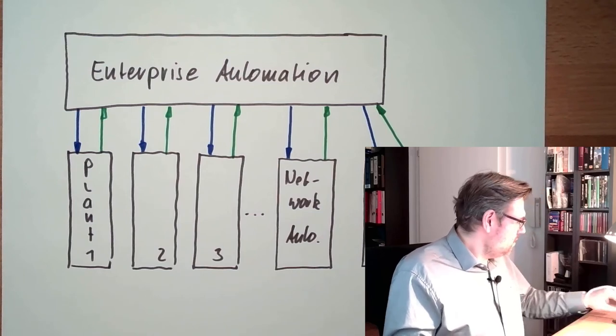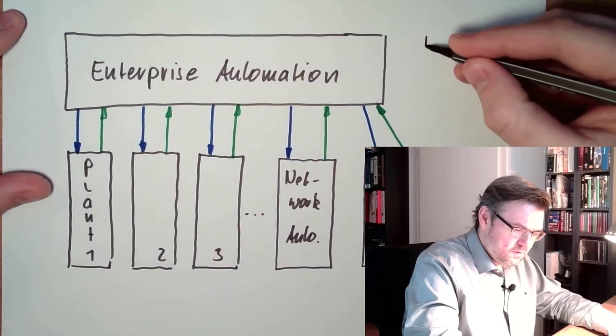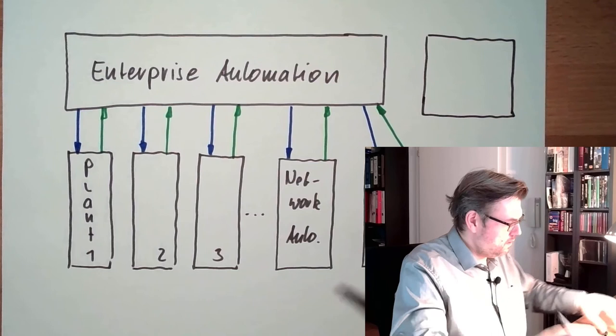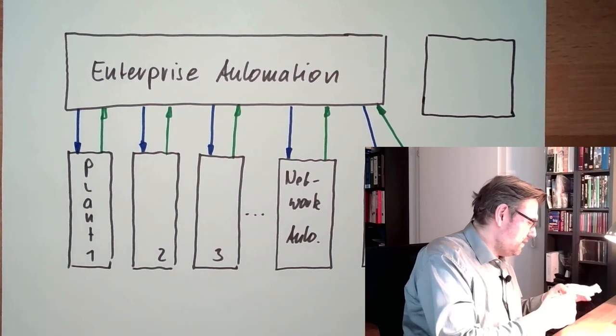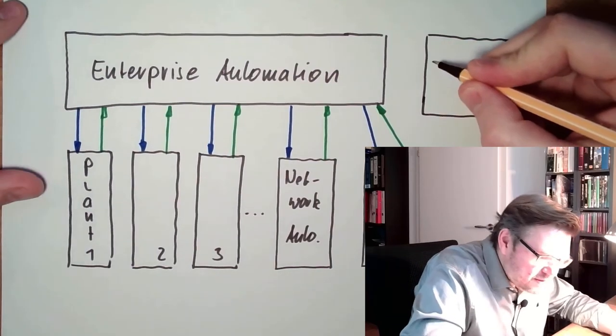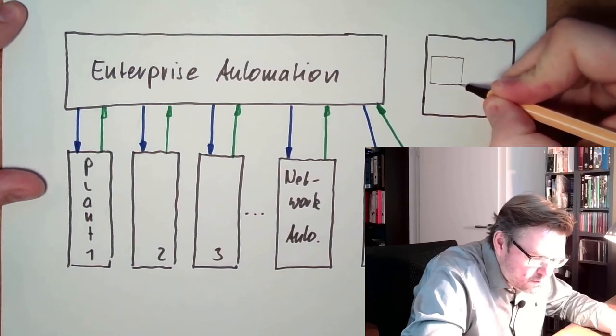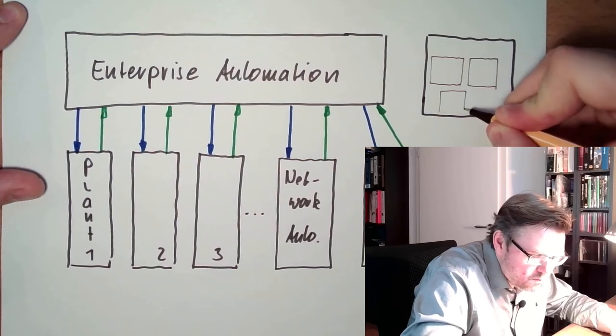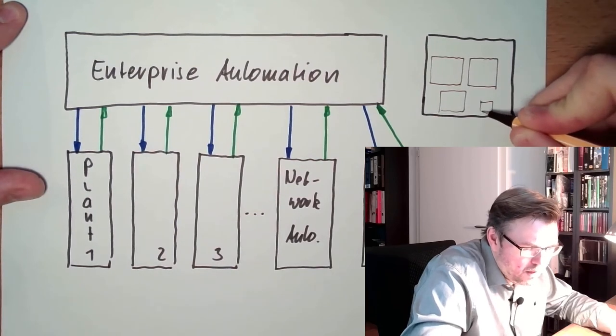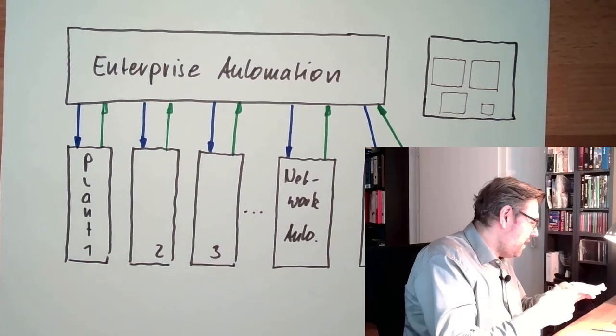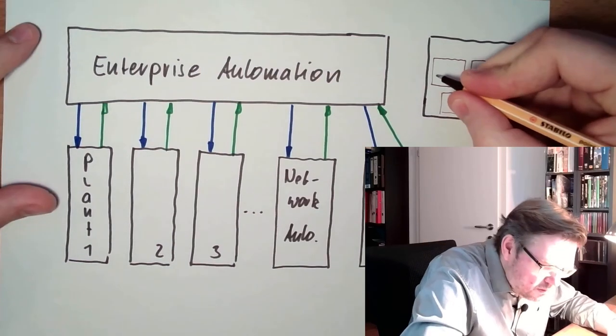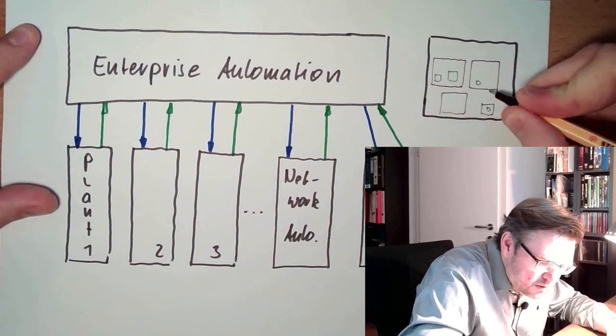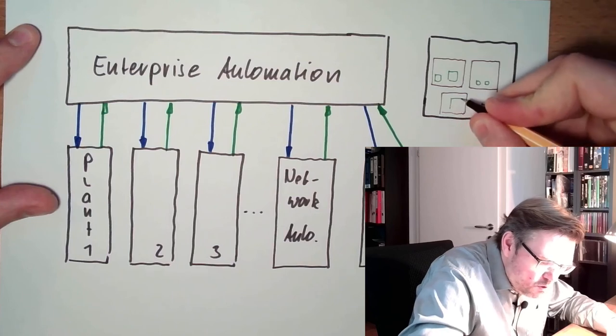So we have here this enterprise automation. Within the enterprise automation we have the different plants—big plants, small plants, whatever. And within the plants we have our units. Smaller units, bigger units.